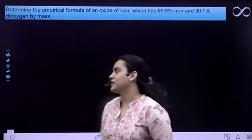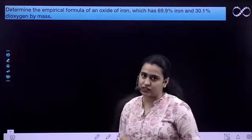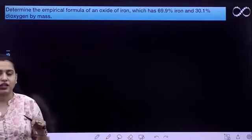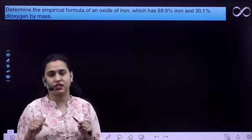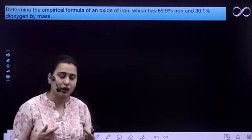Hello students. In this question we have to find out the empirical formula of the oxide of iron. We will be using the table by which we can find out the empirical formula. Empirical formula is basically the simplest ratio of the different types of elements which are present in a compound.